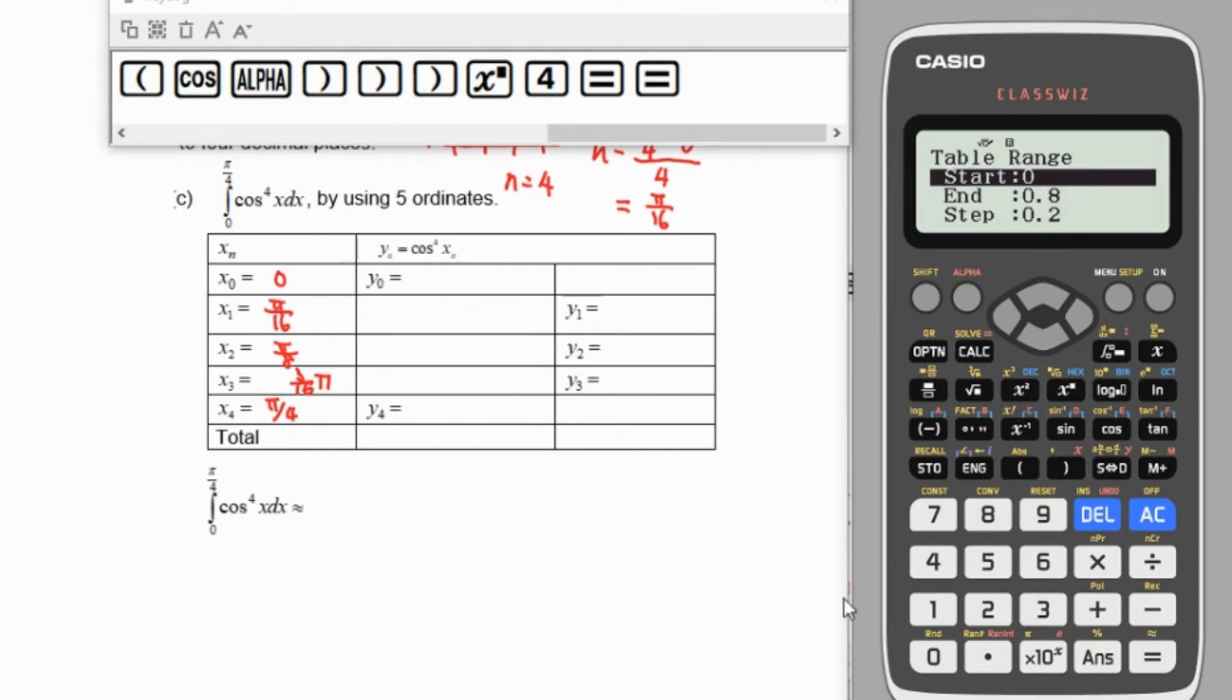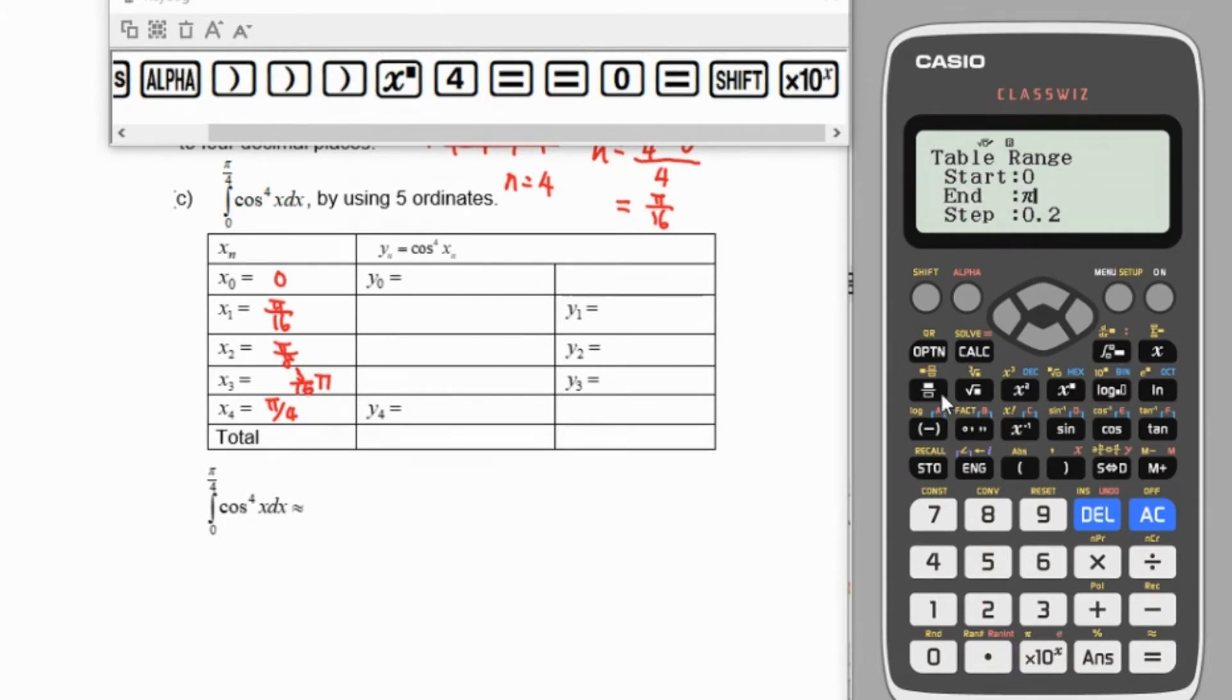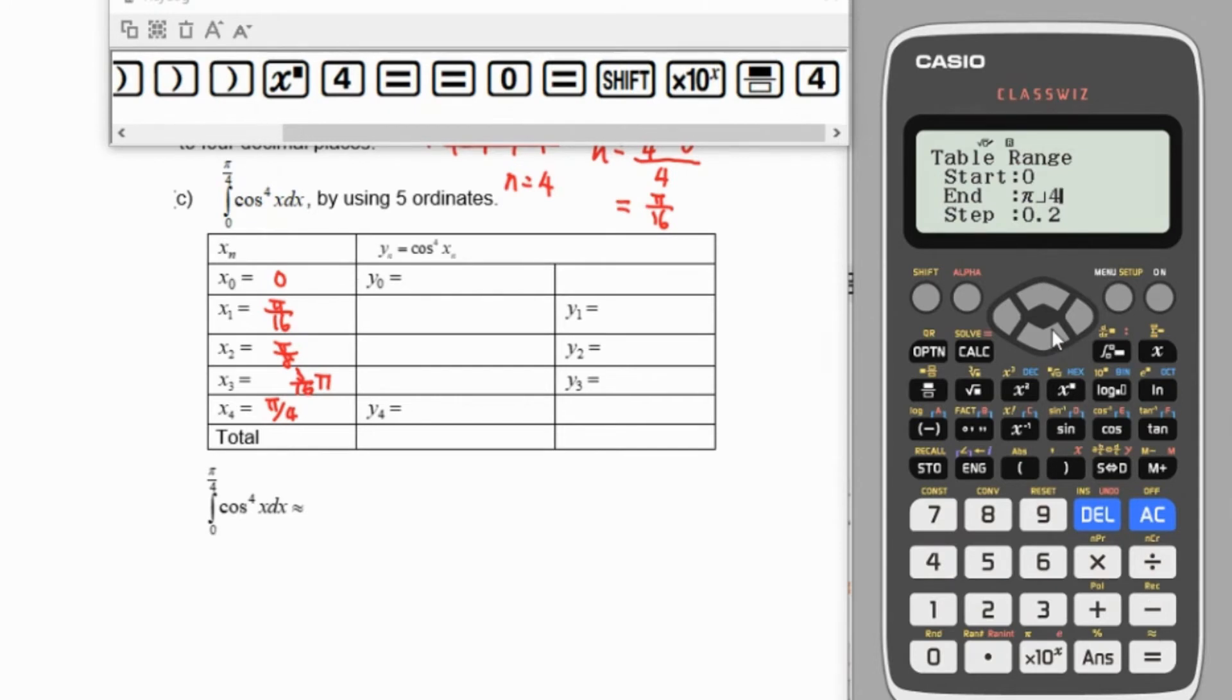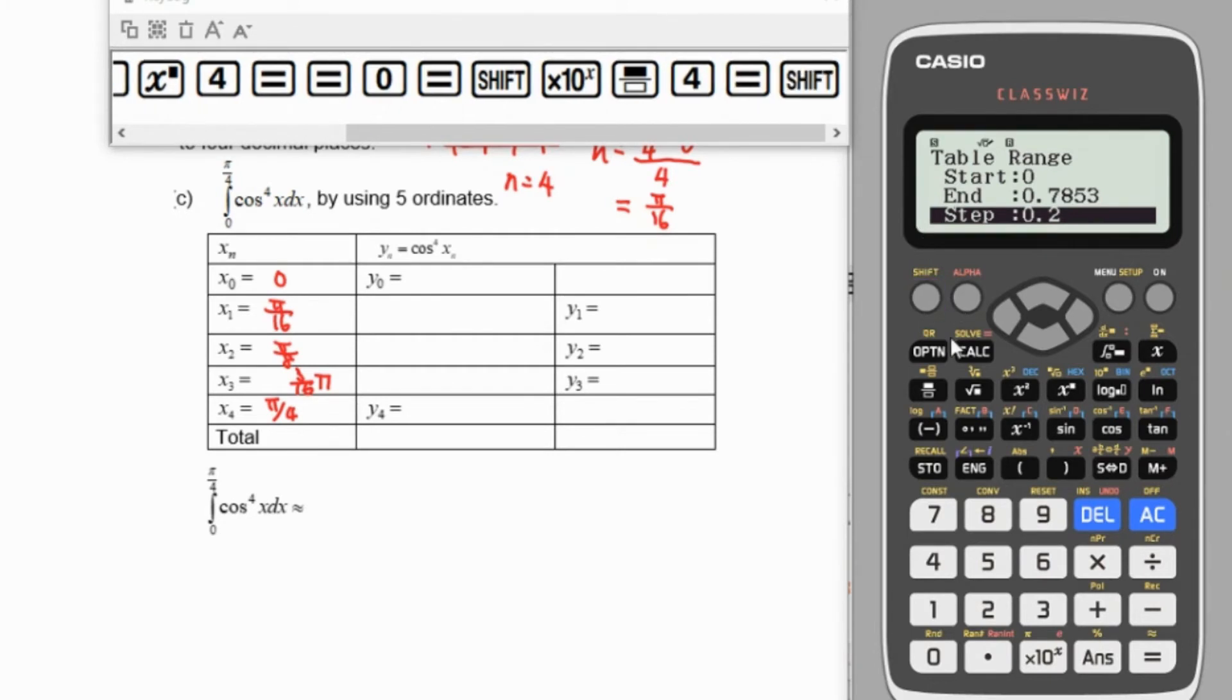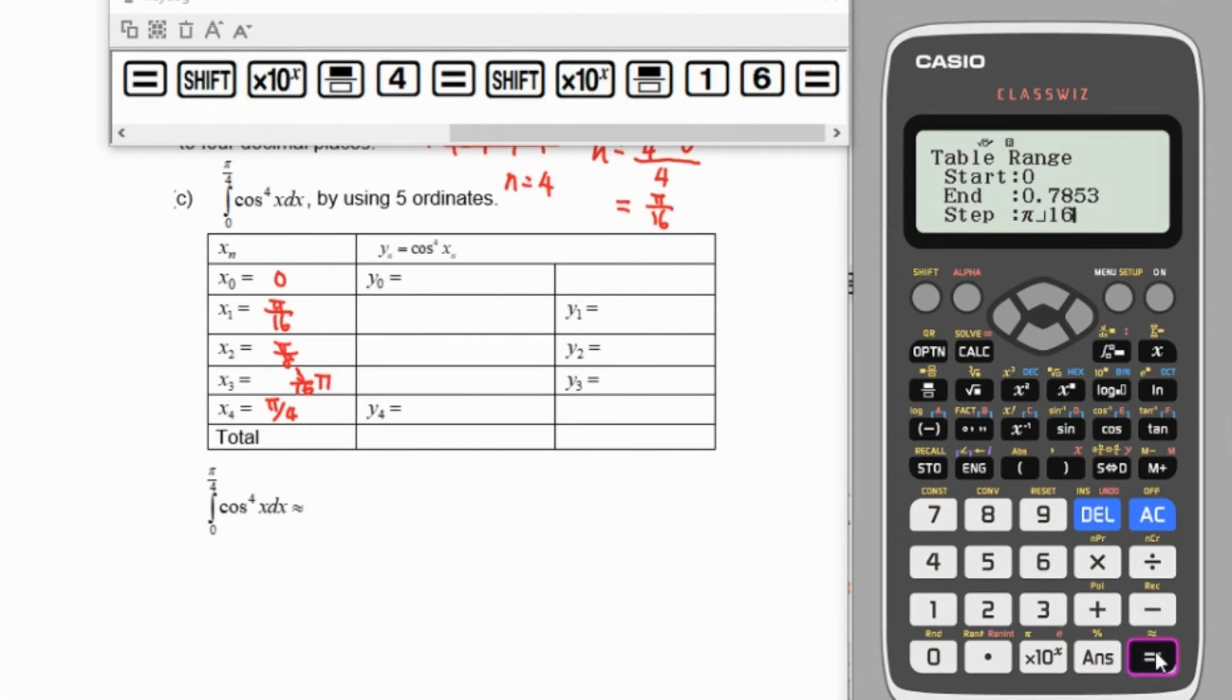The start will be 0, and end will be shift π/4, equals. The step will be π/16, so shift π/16, then equals.